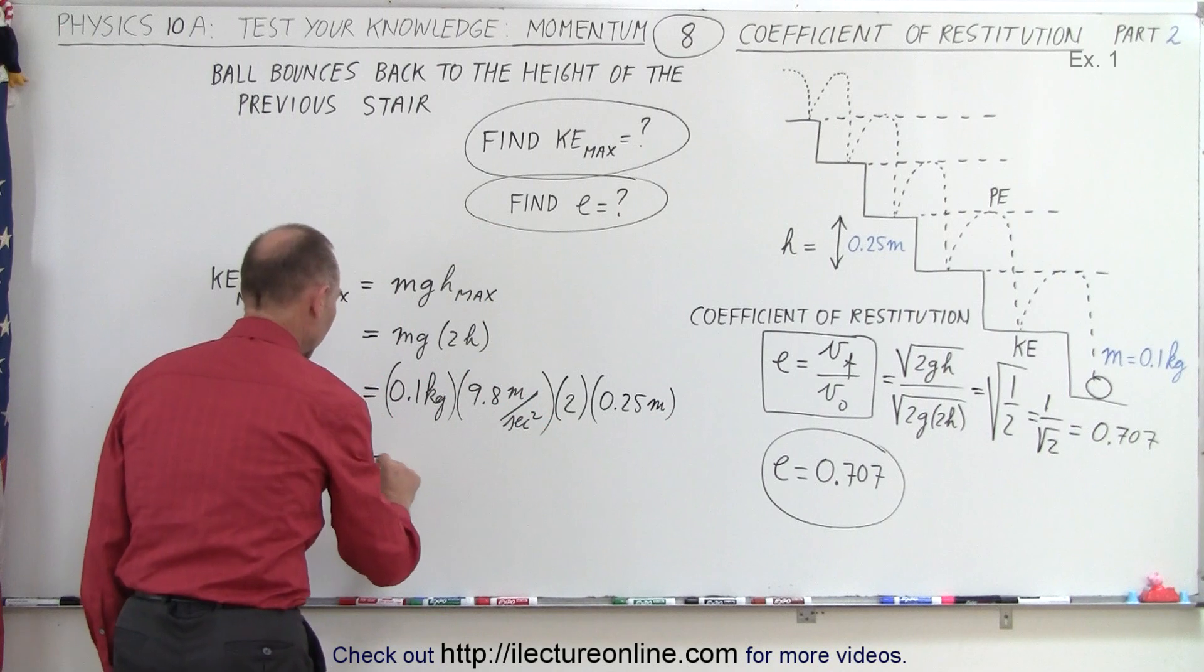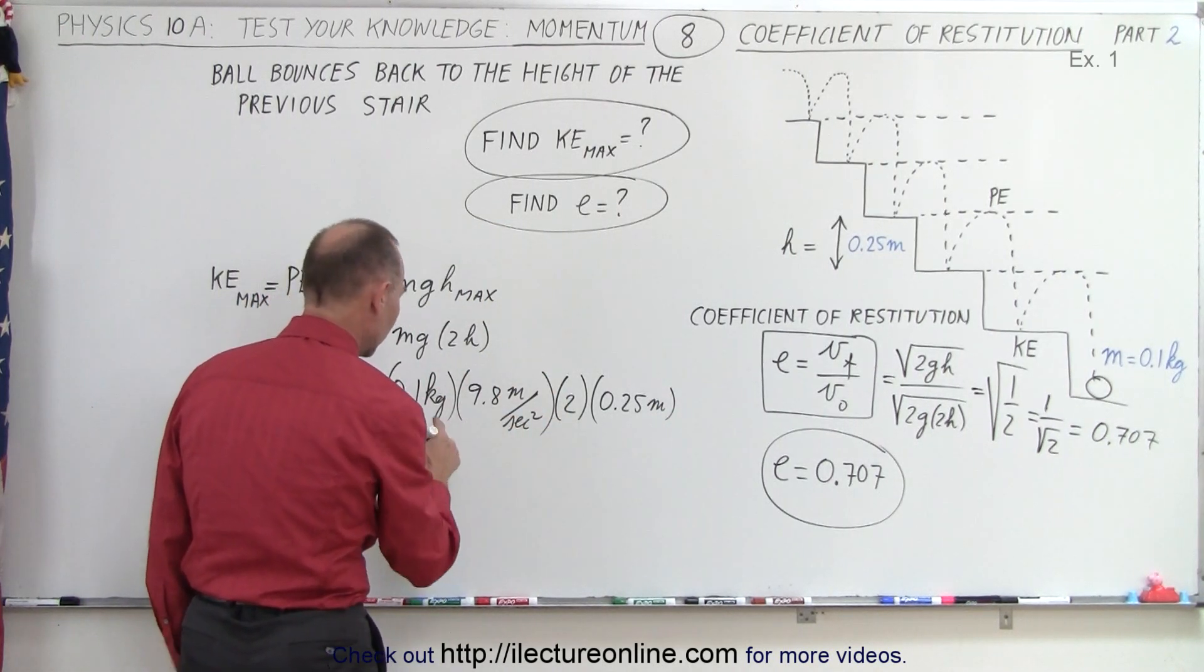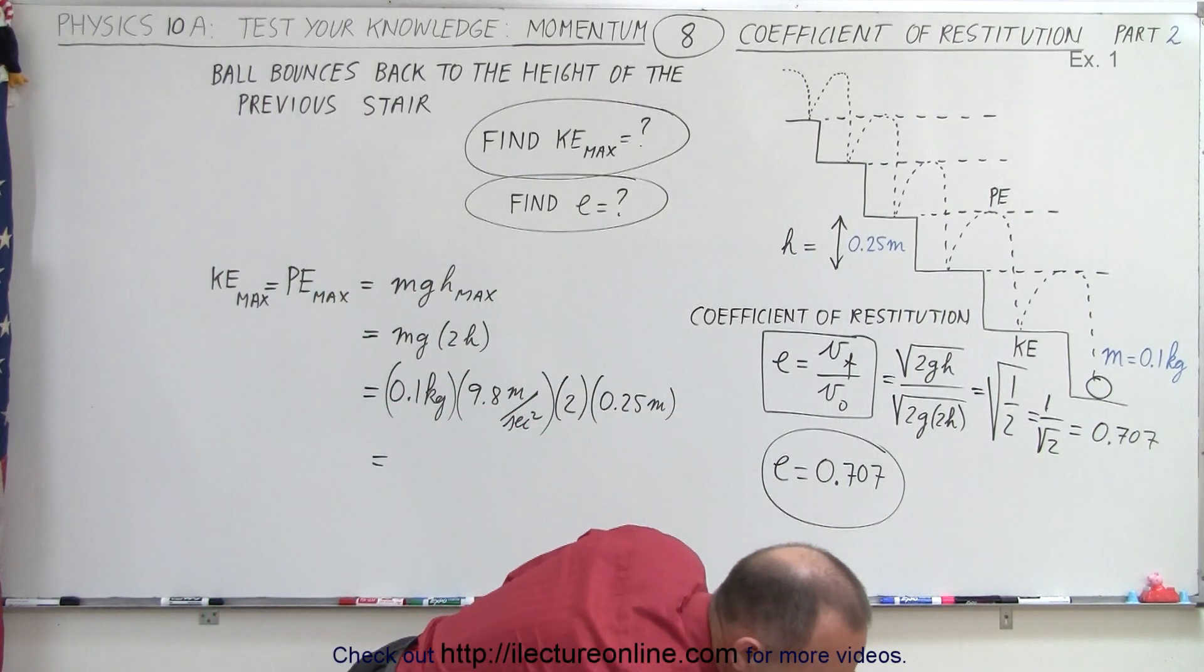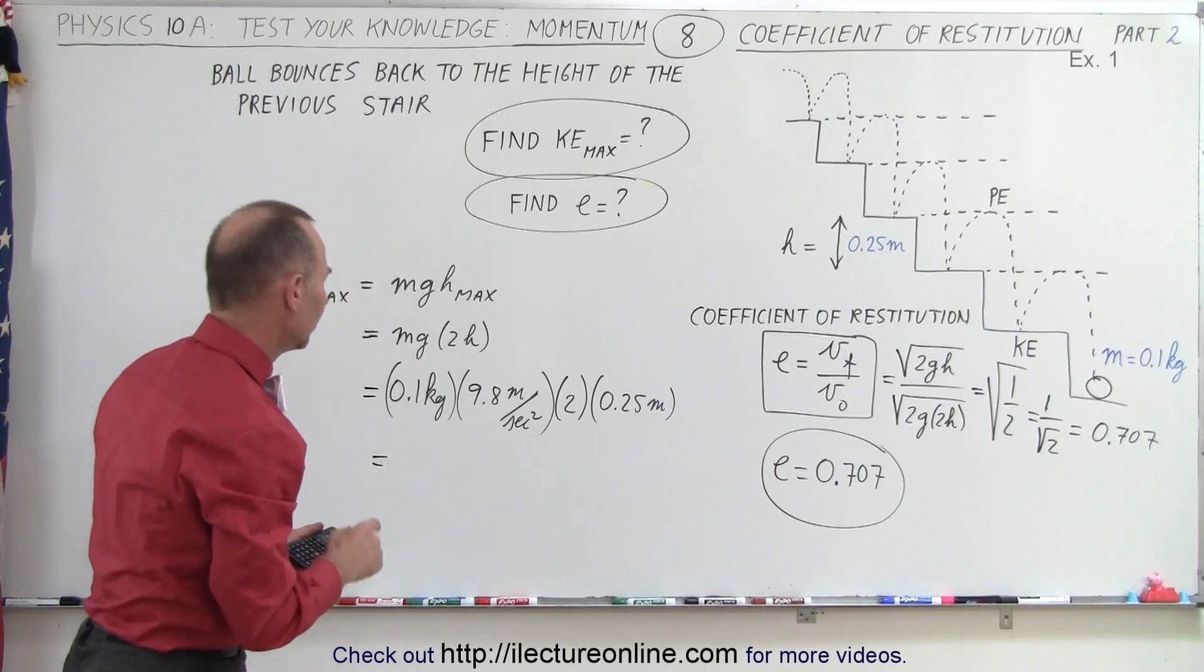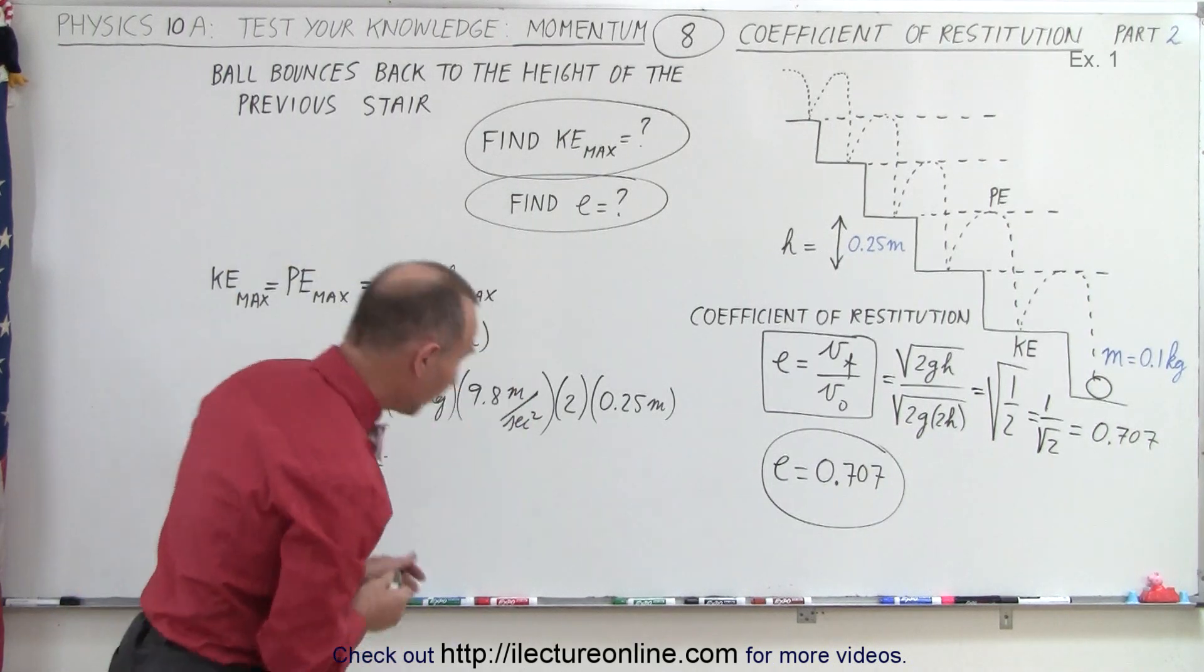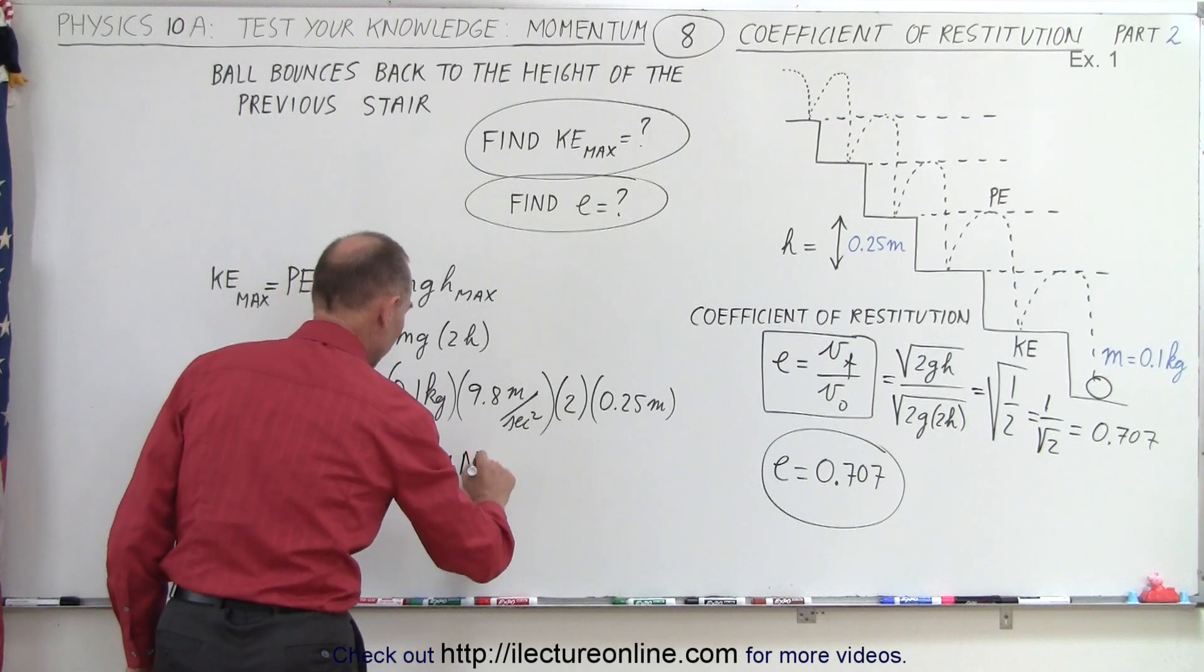And then notice, then we get kilogram meters per second squared, that's newton times meters. And I may need a calculator for that, let's see here. So, we have 0.5 times 0.1 times 9.8, which is 0.49, so we end up at 0.49, that would be newton meters.